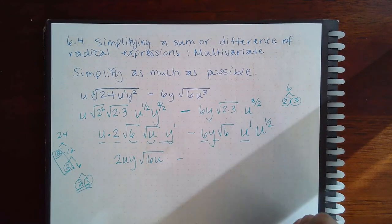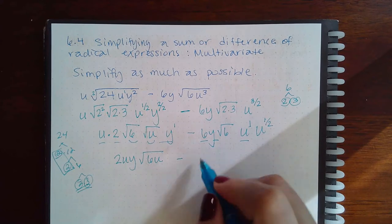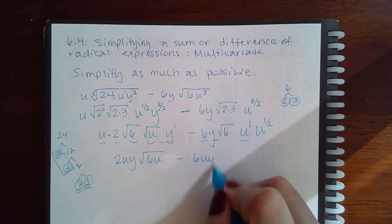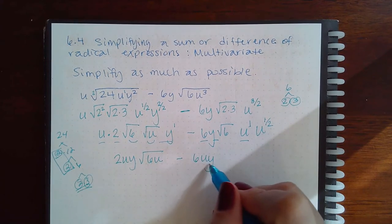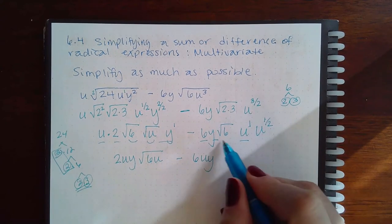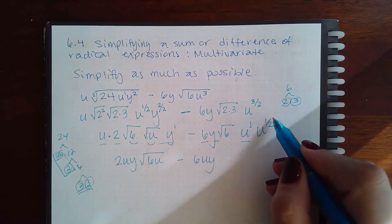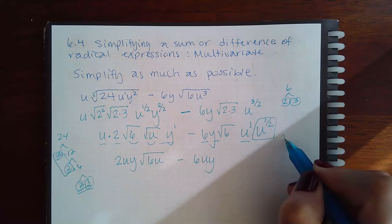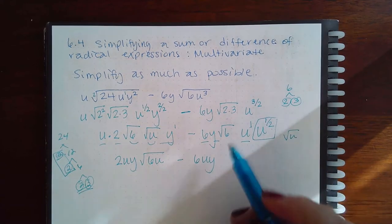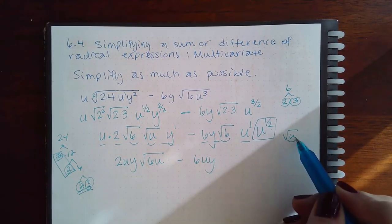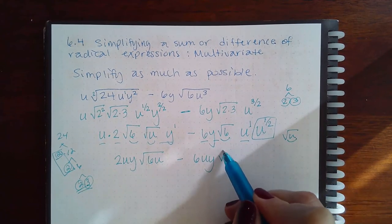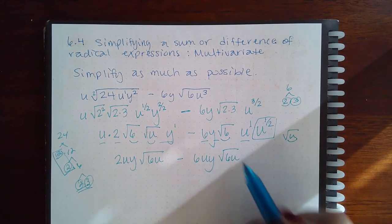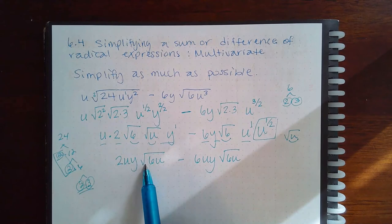Here you're going to multiply all your outsides together so I get 6uy again in alphabetical order, and then the insides. Now remember this guy here is the square root of u, so when I say insides I mean this inside and this inside, and that's going to give you square root of 6u.